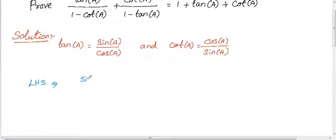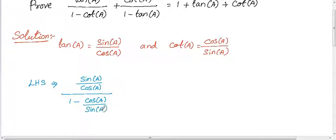So tan a can be written as sin a divided by cos a, whole divided by 1 minus cot a which is cos a divided by sin a. Similarly, plus cot a is cos a divided by sin a, divided by 1 minus tan a which is sin a divided by cos a.